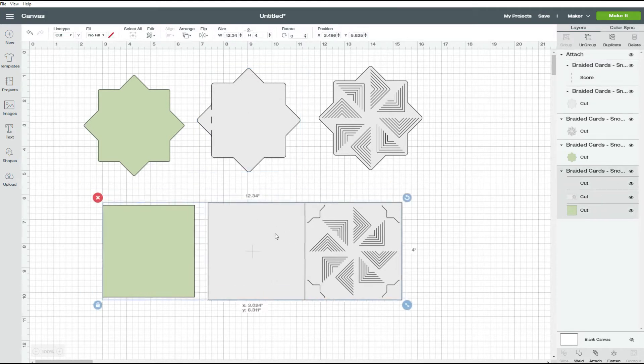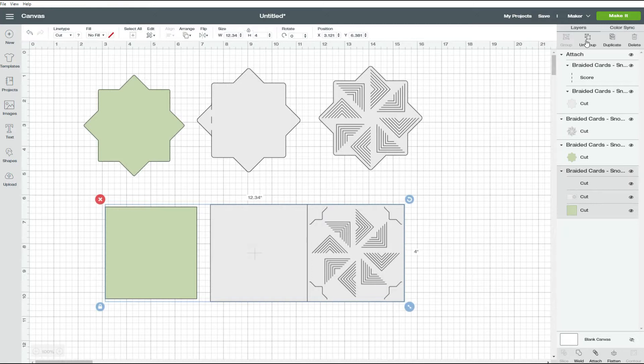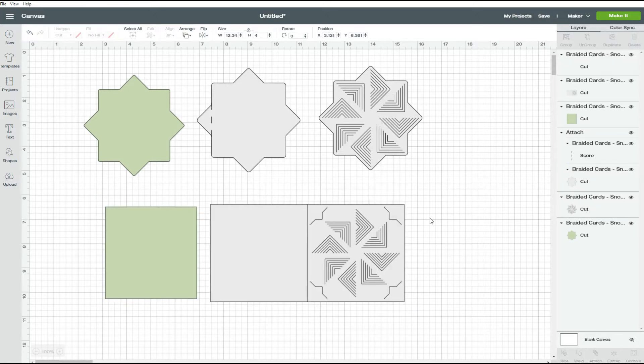For the second card, select that one and click on ungroup. That will take all three elements to the top of the stack. And we need to do the same thing. Change that cut line to a score line and then attach that score line to the card base right here.